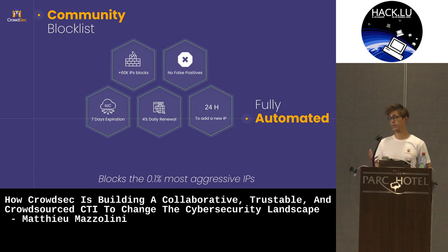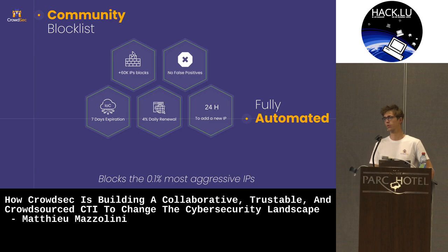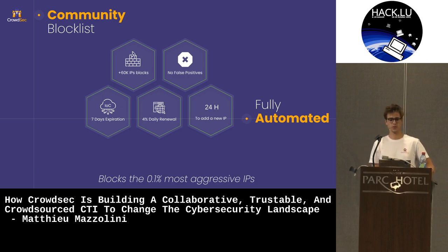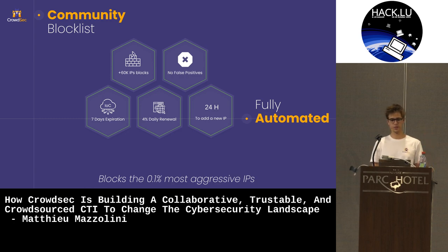We know that because we ran the experiment. We put a machine on the internet with a simple password accessible. After three hours it was breached. After four hours the first watcher of the network reported it. And after less than 24 hours, we had enough watchers reporting so that the expert systems engine, which builds the block list automatically, put it in there.